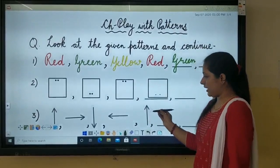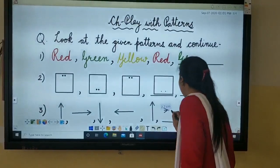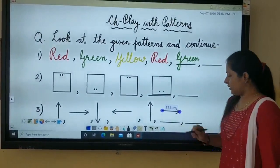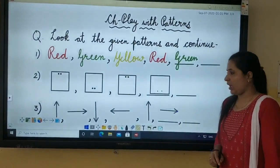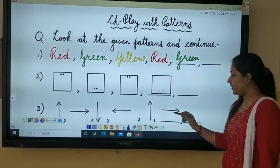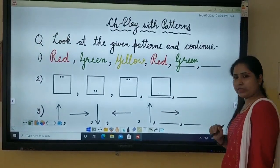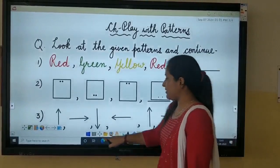So after up, it will be again like this. So you will draw the arrow pointing like this. I hope you have understood this pattern children. In the same manner, continue this and fill in the blank. So what is next?